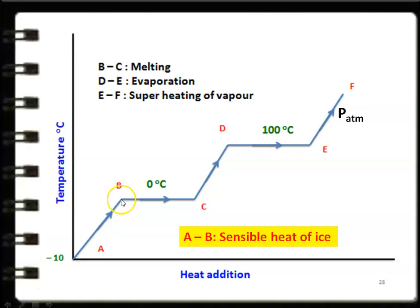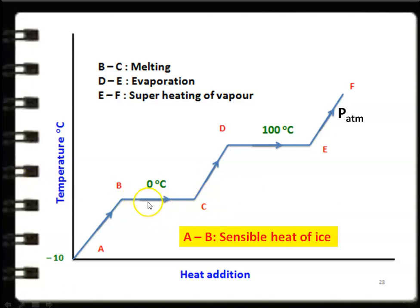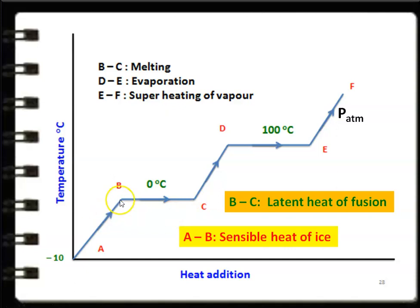At point B, it is saturated ice at 0°C. When heat is added further at constant pressure, the temperature also remains constant along B to C (0°C). The ice melts and is converted into water. At point B it is ice at 0°C; moving toward C, the quantity of ice decreases and water starts to form. At point C, it is completely water at 0°C. The heat added between B and C is called the latent heat of fusion — it is the heat for a change of form, from solid to liquid.